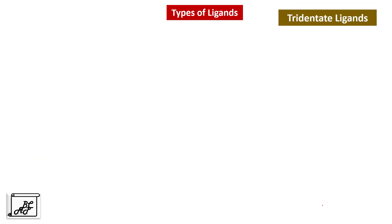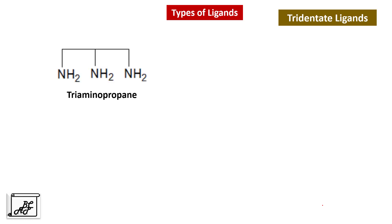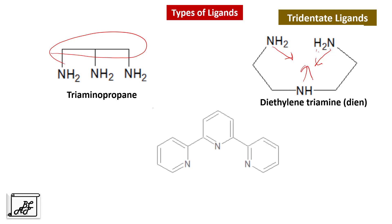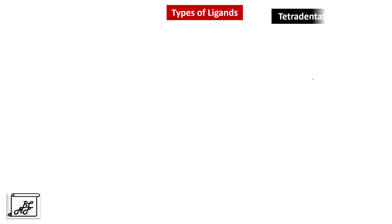Let's move to tridentate ligands. As the name indicates, tridentate means three donor atoms. The first example is triaminopropane — a propane chain where three hydrogens are replaced by NH2 groups. Next is diethyltriamine, also called dien, which has three points of attachment. Another example is terpyridine. These are all examples of tridentate ligands.